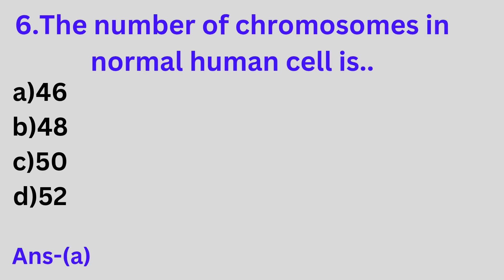Question 6: The number of chromosomes in the normal human cell is A. 46, B. 48, C. 50, D. 52. Option A is the correct answer. The number of chromosomes in human beings is 46.